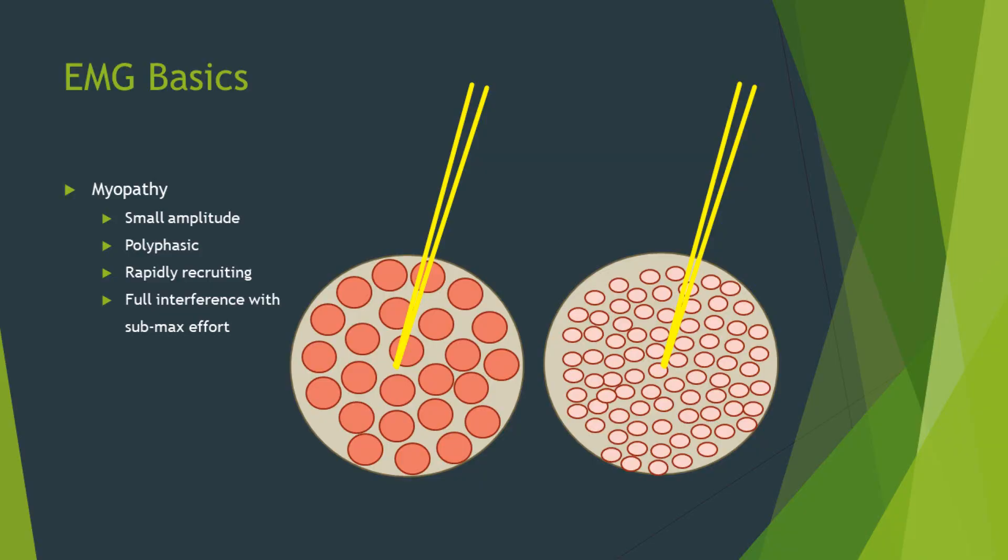Let's first start off with the myopathic situation. Here we have a schematic of a needle sitting inside some muscle, and around it is a radius where you can actually pick up the signals from the motor fibers. Within that sphere of detection, one will be able to see individual activities from the muscle fibers.